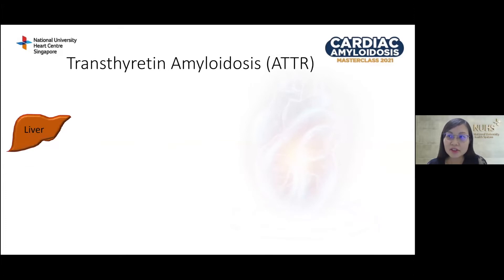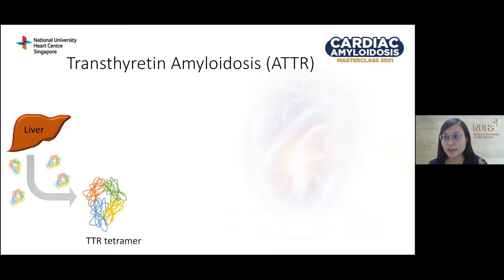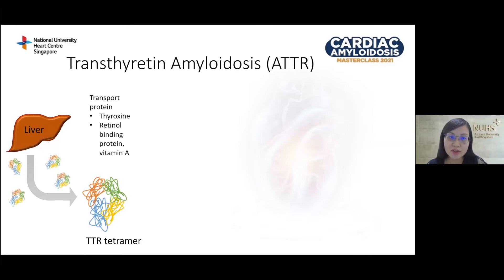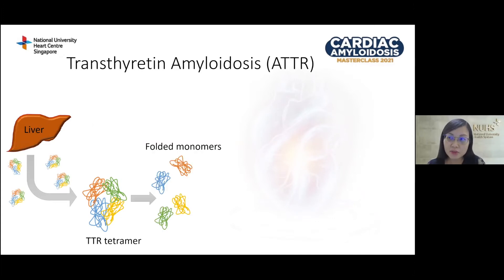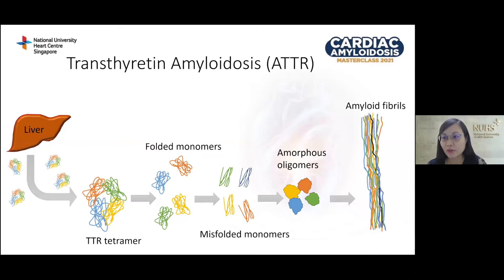Transthyretin, or TTR, is a different type of protein present in all of us. It consists of four identical amino acid monomers bound together, forming a tetramer. The TTR tetramer functions as a transport protein, carrying the hormone thyroxine and the retinol-binding protein, which carries vitamin A throughout the body. Produced in the liver, it circulates intact as a tetramer. In patients with amyloidosis, the TTR tetramer breaks apart into monomers, which misfold and eventually form amyloid oligomers and fibrils. In hereditary ATTR, this is due to a genetic mutation making the tetramer unstable, while in wild-type TTR, the tetramer becomes unstable possibly due to the aging process.